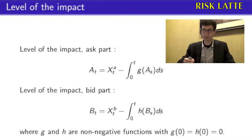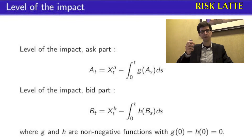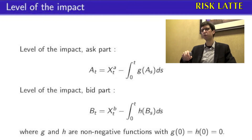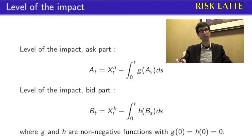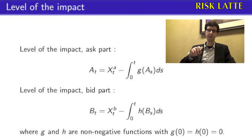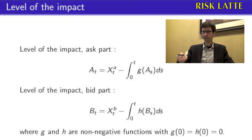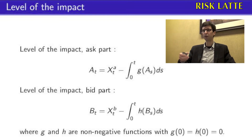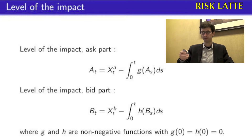For this level of the impact, we define two processes. These processes were defined first by Prado-Yu, Shackett and Shreve in a paper in 2011 about optimal execution. Here AT is the level of impact for the ask part. It is defined as XDA, which is simply the total number of shares bought up to time T minus the integral of a positive function.